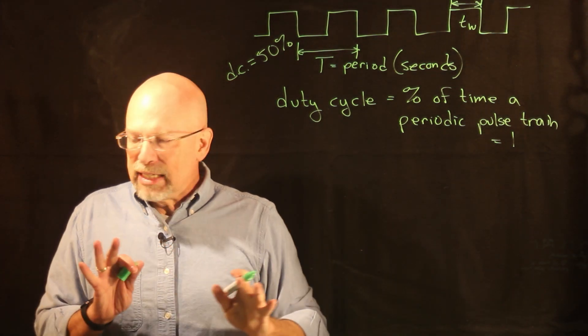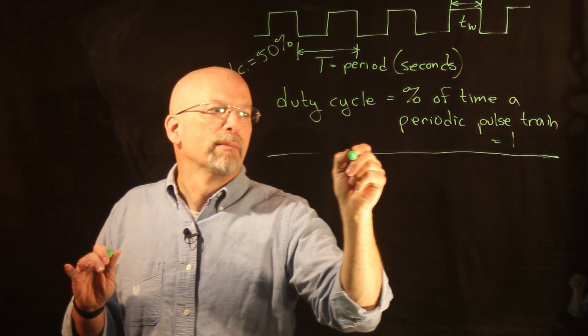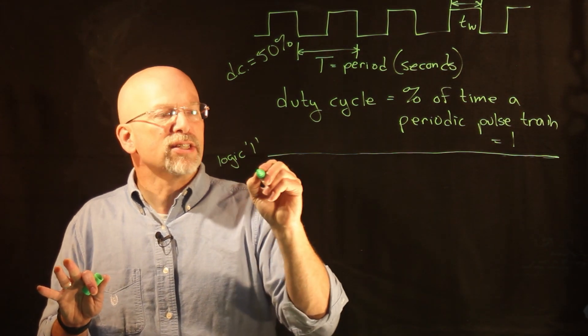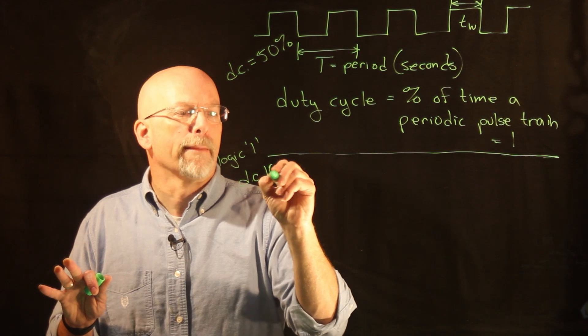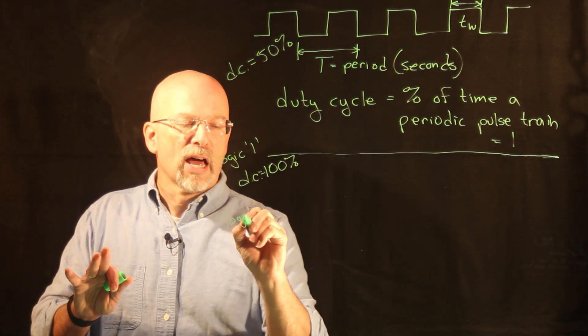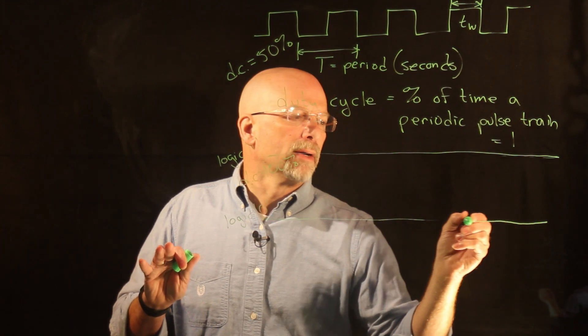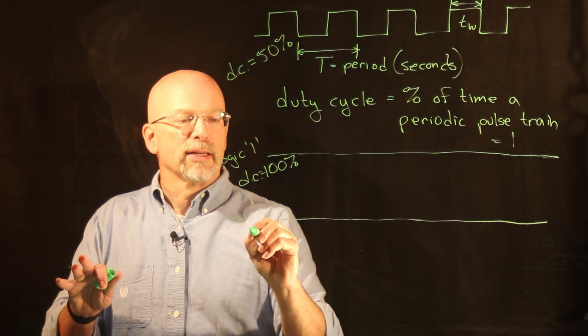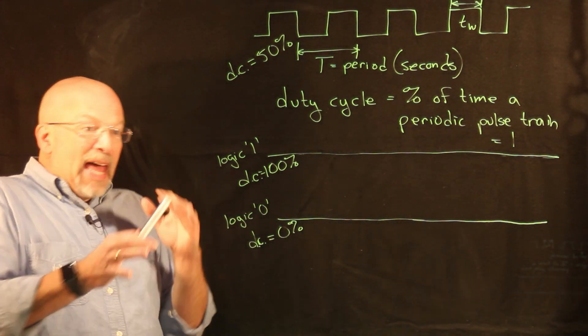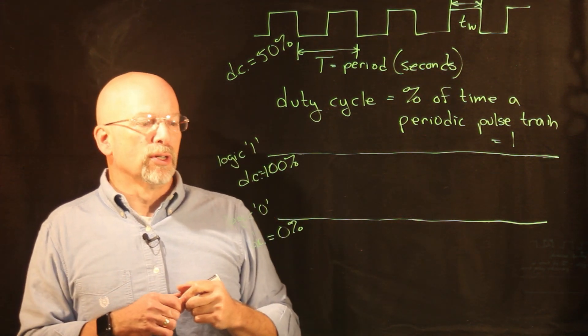If we wanted to have the LEDs on full, at 100% power, well that's actually just a constant logic one, and this is a duty cycle of 100%. What about if we want to turn the LEDs off? Well, if we have a constant logic zero, that's a duty cycle of zero percent. And in between, the pulses as they're getting wider and wider and wider, your duty cycle is slowly but surely increasing.